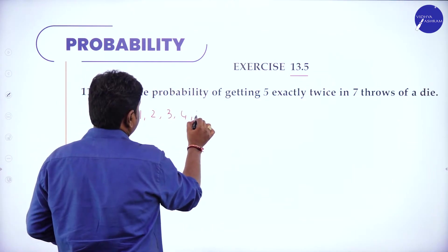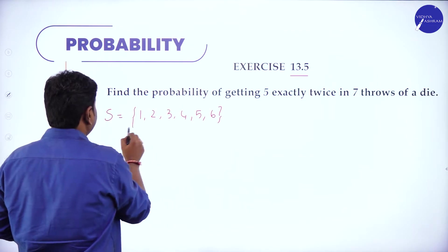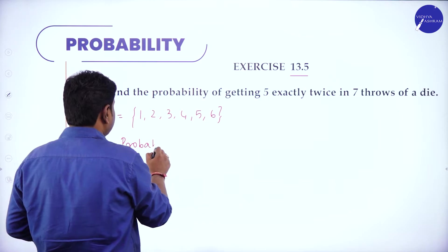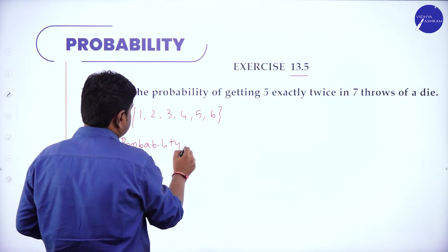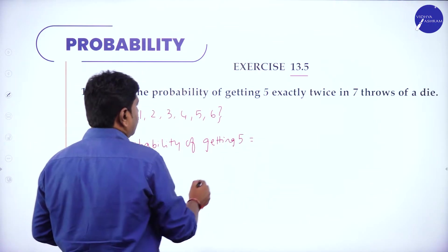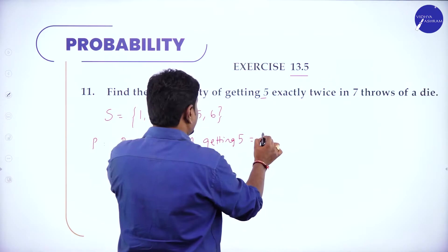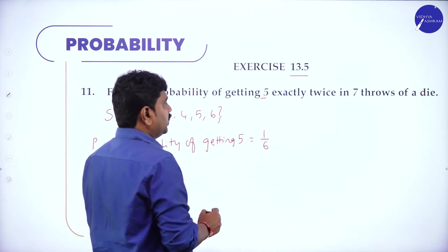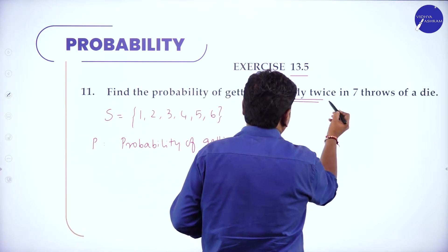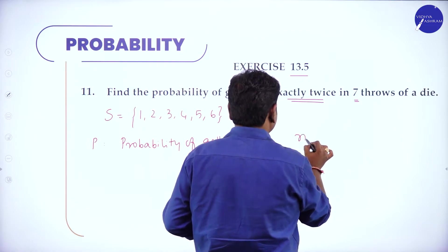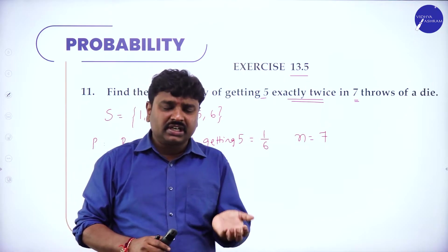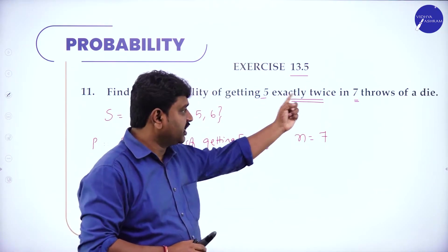When you roll or throw a die, the possible outputs are 1, 2, 3, 4, 5, 6 — this is the sample space. The probability of success in this problem means the probability of getting 5, which is 1 out of 6. So p = 1/6. You are throwing 7 times, so n = 7. These are Bernoulli trials because the 7 trials are independent and finite.